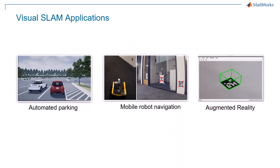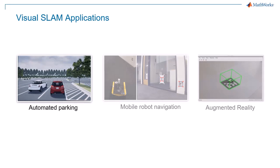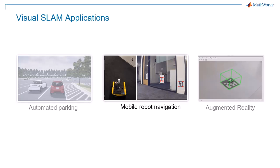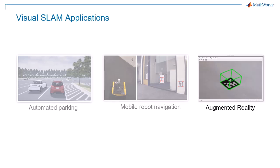Applications of Visual SLAM can be found in many modern-day scenarios. Autonomous vehicles use cameras to safely navigate populated roads. Robotic mechanisms interact with and move through their surroundings. Even augmented reality requires a precise understanding of the surrounding environment to overlay digital information on the real world.